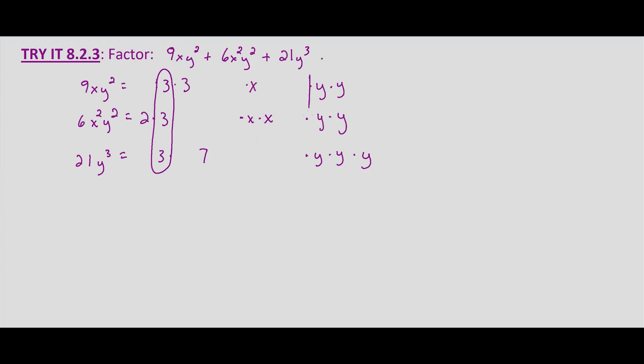But then we have two columns of y. So the greatest common factor is 3 times y times y, which equals 3y².